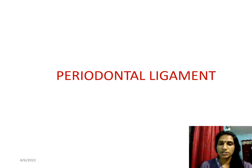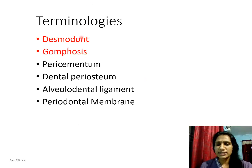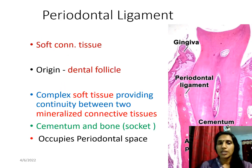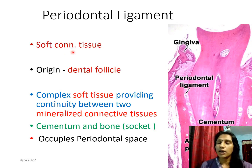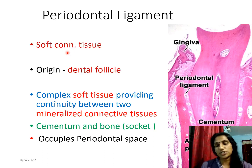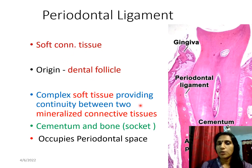Periodontal ligament is one component of periodontia and is known by different terminologies: desmodont, gomphosis, pericementum, and dental periosteum. Remember, it is a soft connective tissue. The remaining structures of the teeth such as dentin and cementum are mineralized, while periodontal ligament is a soft connective tissue which originates from the dental follicle or the dental sac. It is a complex soft tissue providing continuity between two mineralized connective tissues — cementum on one side and bone on the other.